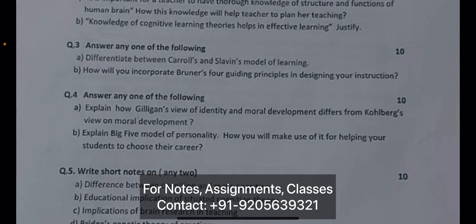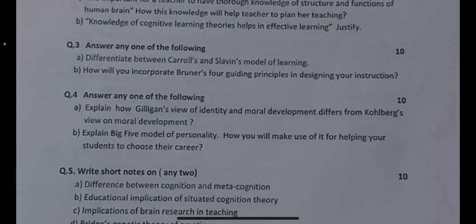Question number three: answer any one of the following. Part A: differentiate between Carroll's and Slavin's model of learning — this is very important. Part B: how will you incorporate Bruner's four guiding principles in designing your instruction?